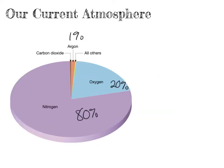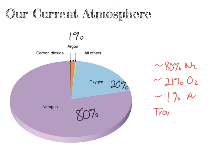Some key facts to remember: our current atmosphere is made up of approximately 80% nitrogen, approximately 21% oxygen, approximately 1% argon, and it also contains traces of other gases including water vapour, other noble gases, and methane.